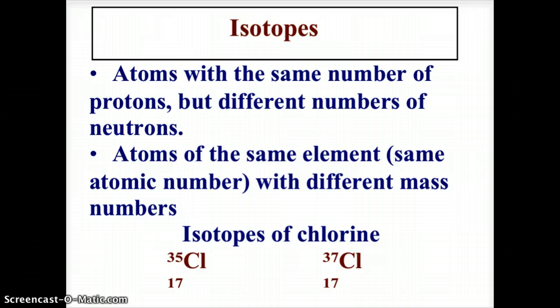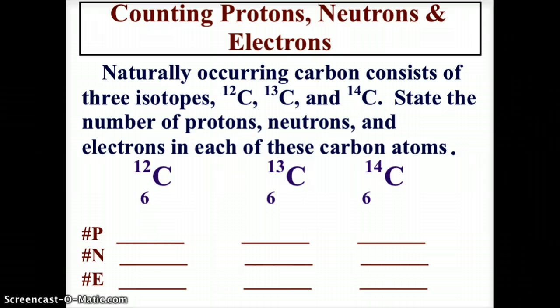Chlorine-35 has 17 protons and 18 neutrons because 17 plus 18 equals 35, while chlorine-37 has 17 protons but 20 neutrons. It would be heavier as an atom but it'd still be chlorine - it would be an isotope, because it now has 20 neutrons instead of 18, and this changes the mass.